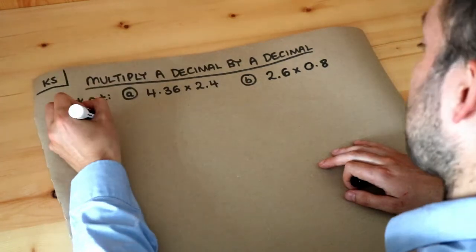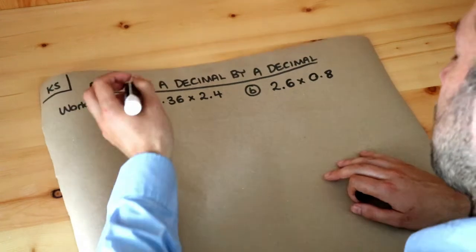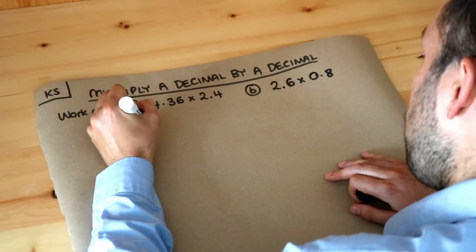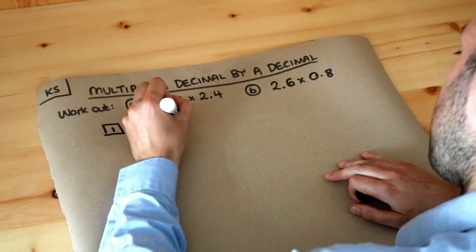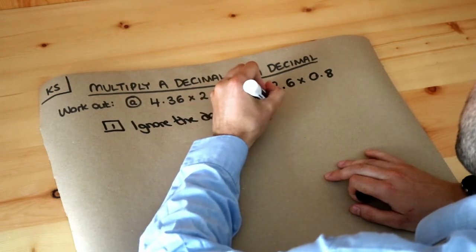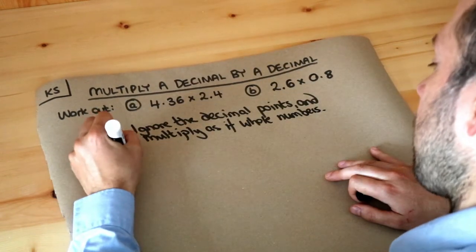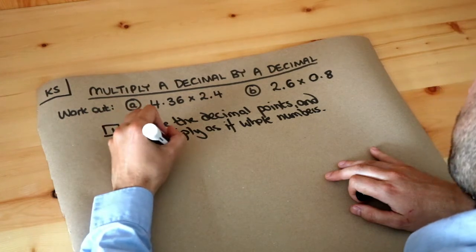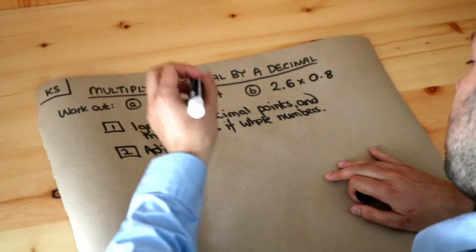Now I'm going to write out the strategy and then we're going to carry it out. The first thing is to ignore the decimal points and multiply as if they were whole numbers, and then we have to adjust for any movements in decimal point, which I'll explain how we do that.